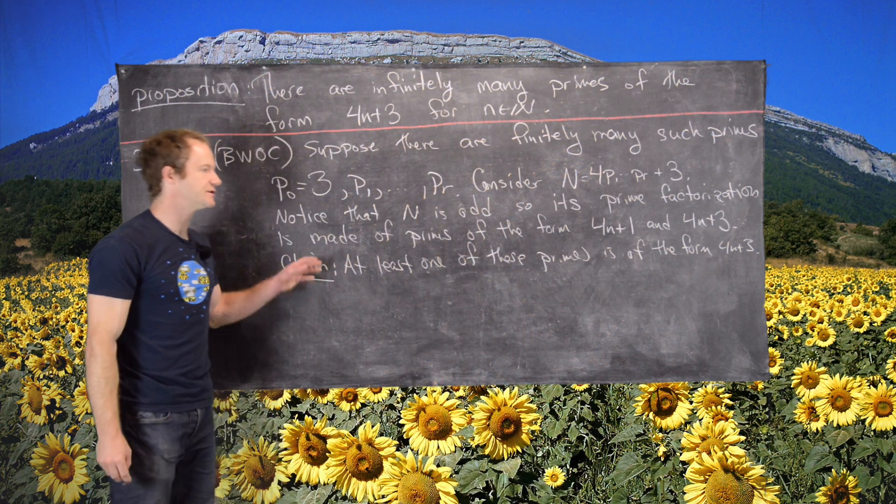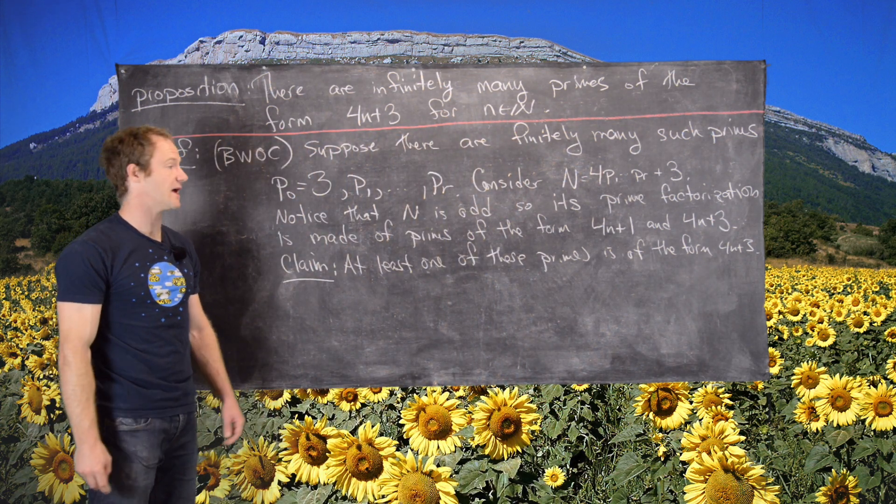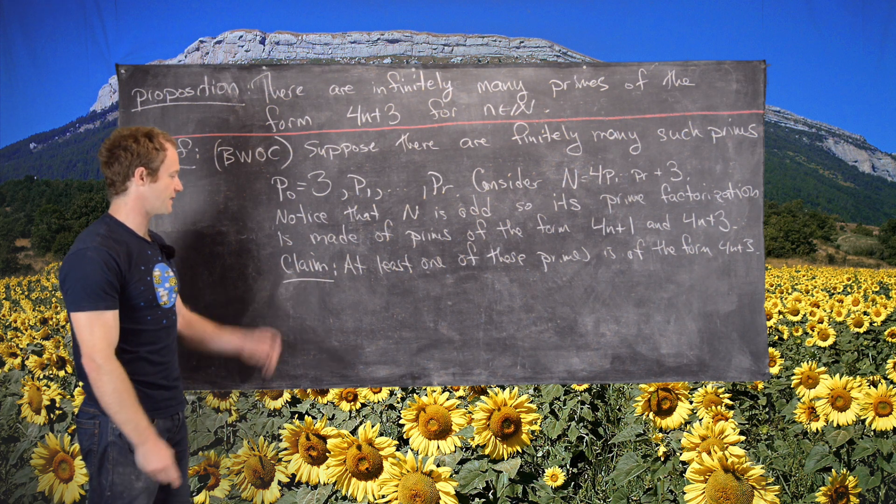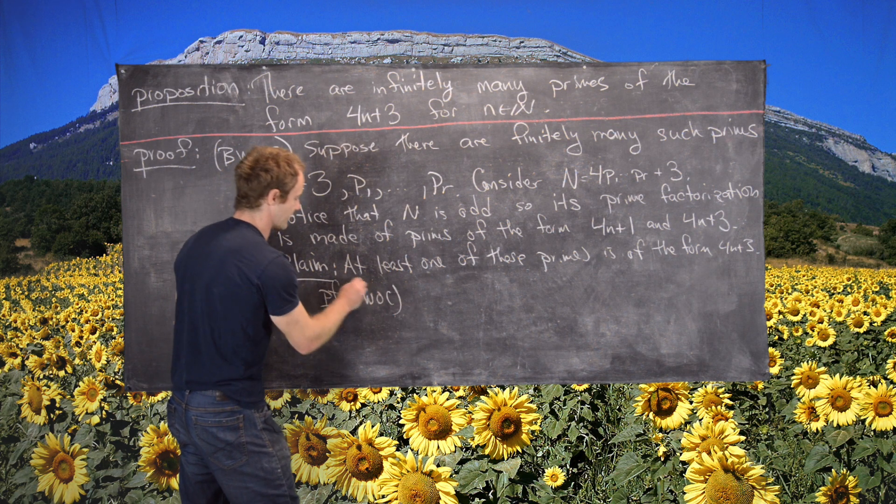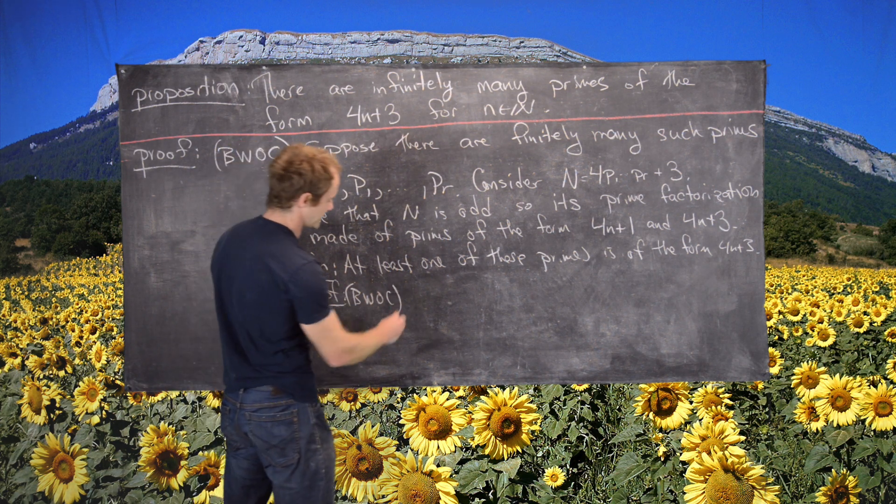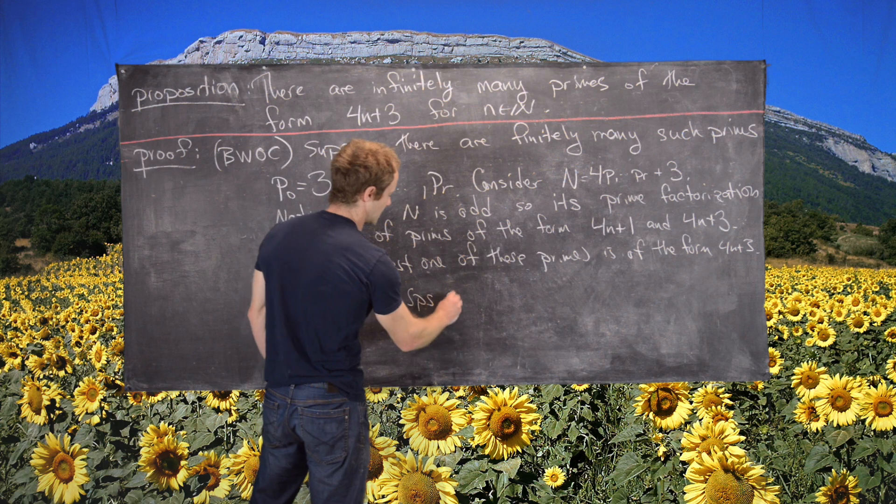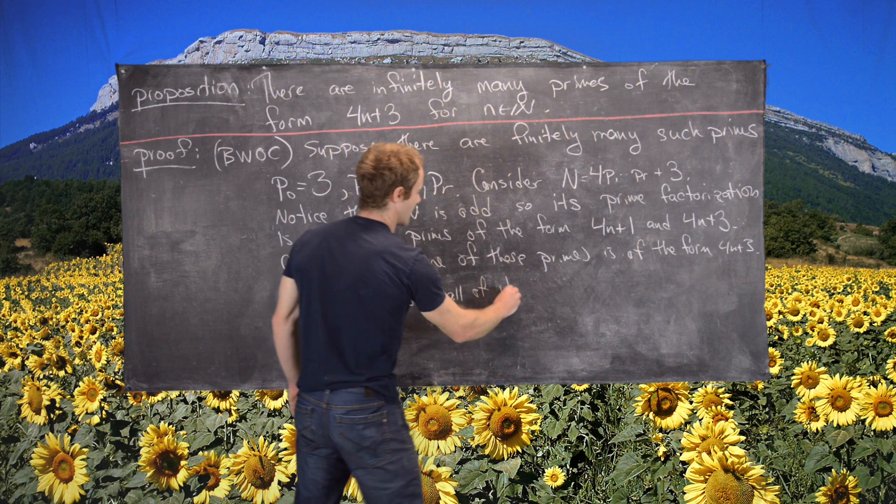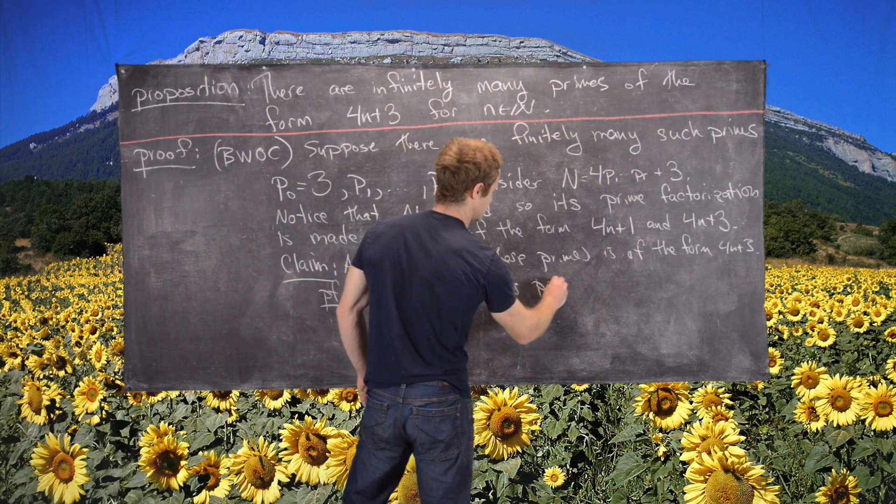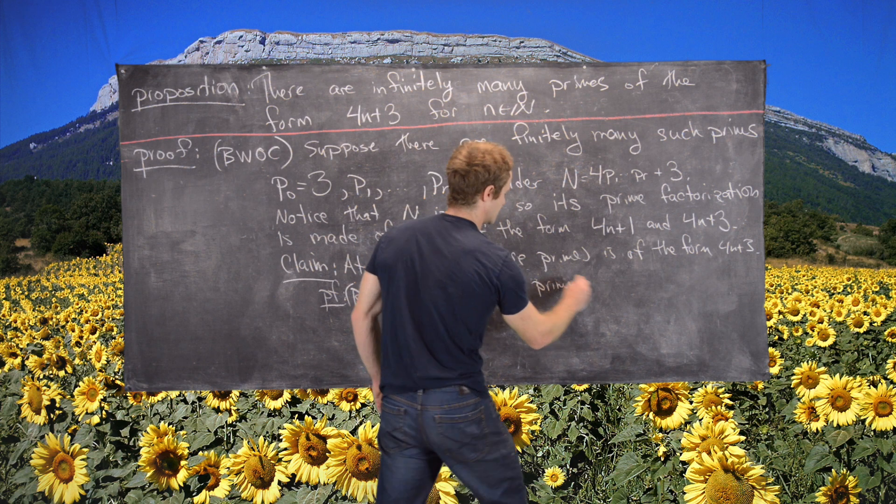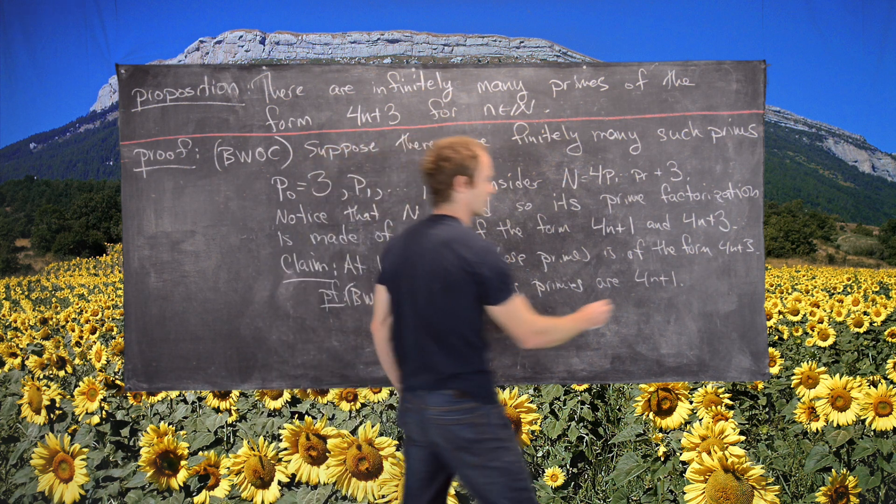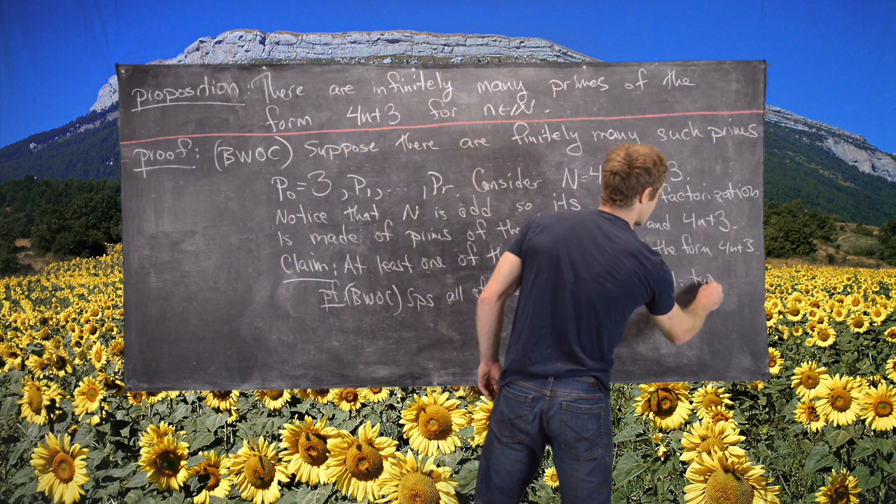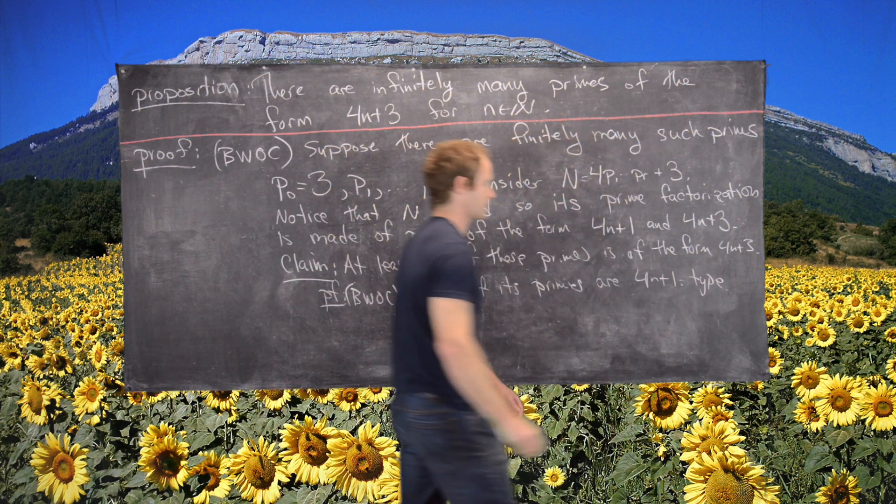And so how we'll do that is kind of a proof by contradiction within this big proof. So here we'll have a little proof right here. By way of contradiction, suppose all of its primes are 4n plus 1 type.